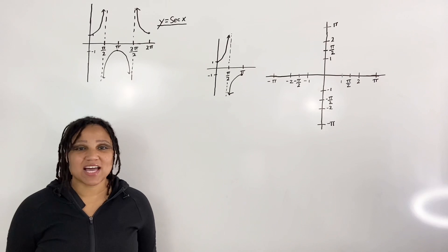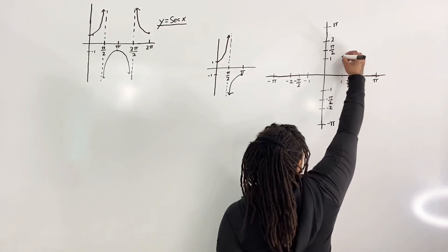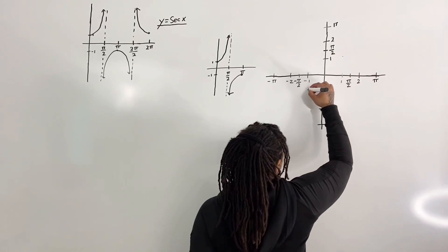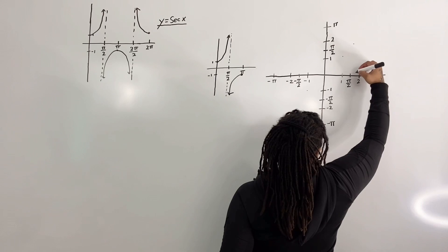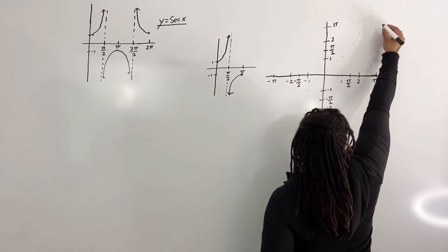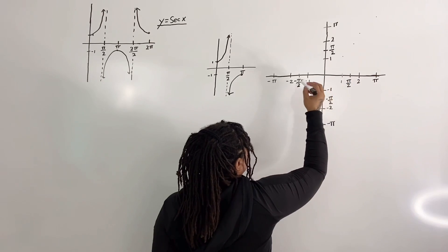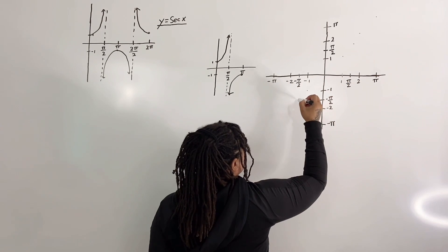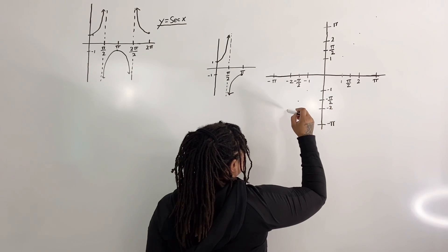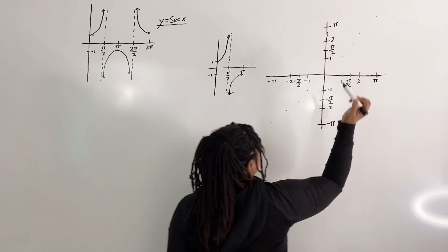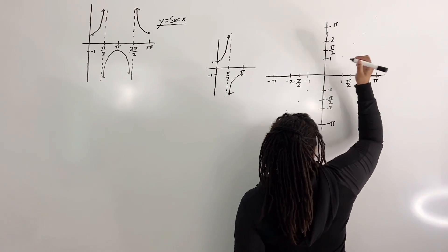Step two: draw the line y equals x. So I'm going to put a couple of dots. We have the points (2, 2), (pi, pi), (negative one, negative one), and (negative pi over two, negative pi over two). I'm just putting a few points on the graph and drawing a dotted line.